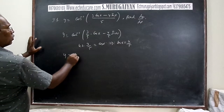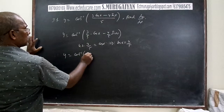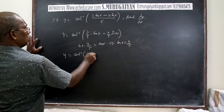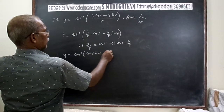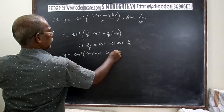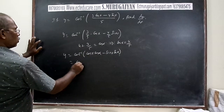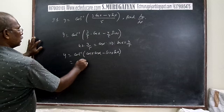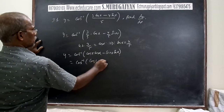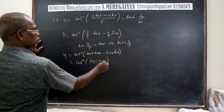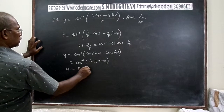Then y = cos⁻¹(cos x · cos α - sin x · sin α), which equals cos⁻¹(cos(x + α)). Therefore y = x + α.